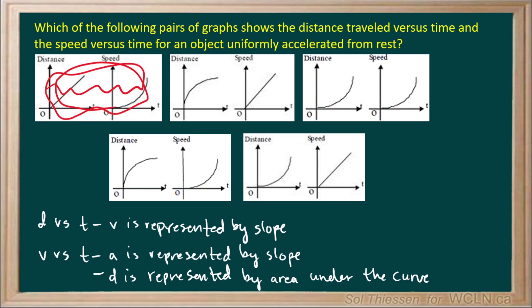Next we have a distance versus time graph which indicates a high initial speed that is decreasing. But then on our speed versus time graph, we see a zero initial speed that is increasing. So this set of graphs does not match. Although the speed graph does show a uniform acceleration, and the distance versus time graph may also show a uniform acceleration, they do not show the same motion. So it's not the correct choice.